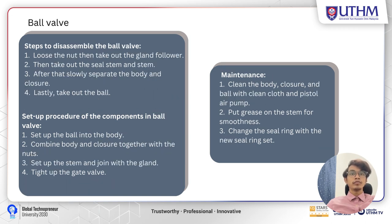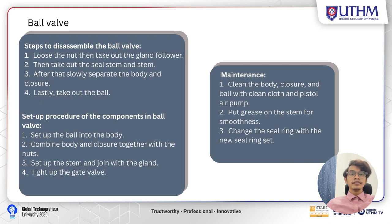For the ball valve, the steps to disassemble are: loosen the nut and take out the gland follower; take out the seal stem and stem; slowly separate the body and the closure; and lastly take out the ball. To reassemble: set up the ball into the body; combine the body and closure together with the nuts. For maintenance, clean the body, closure, and ball with clean cloth, and if necessary use a pistol air pump. Put grease on the stem for smoothness and change the seal ring with a new set.